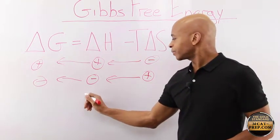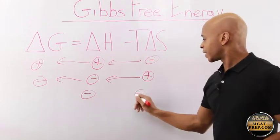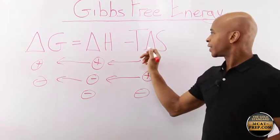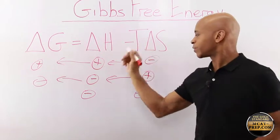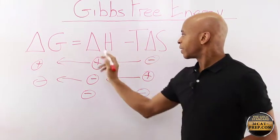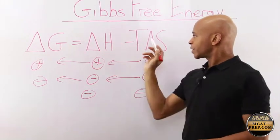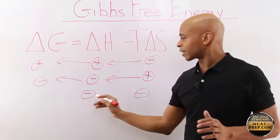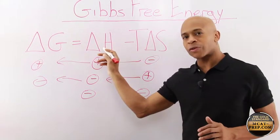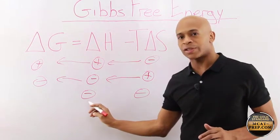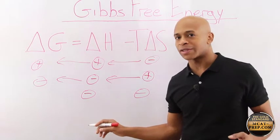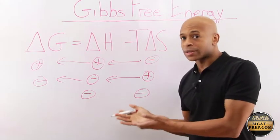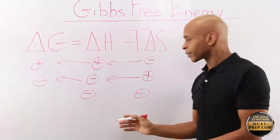For example, when this is negative, then it makes this positive. Negative times negative makes this positive, but then this is negative. If this is positive and this is negative, some students think that any exothermic reaction, when delta H is negative, means that the reaction will be spontaneous. Well, you'll see now that's not necessarily true.